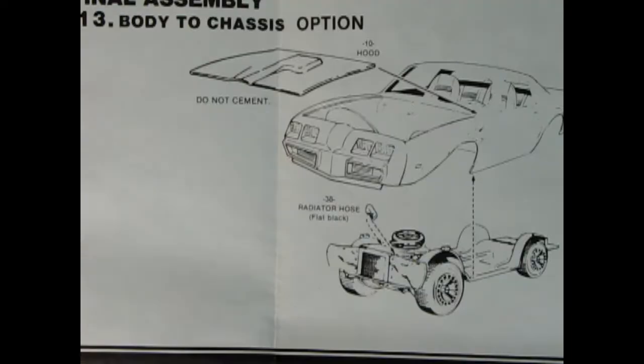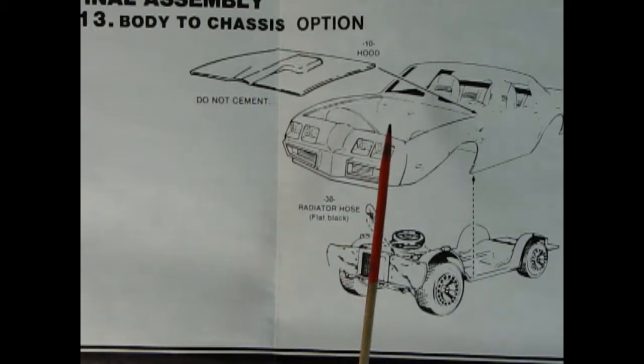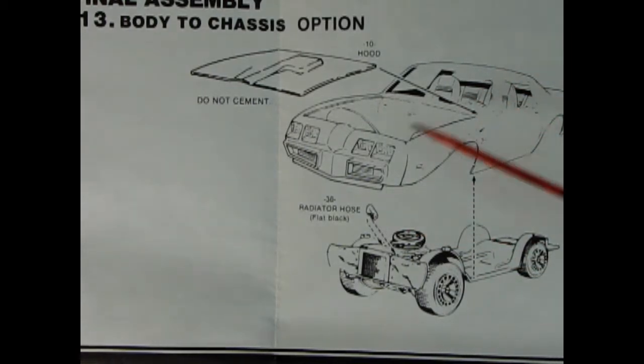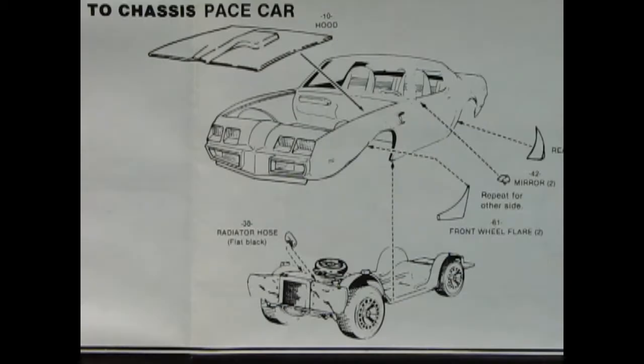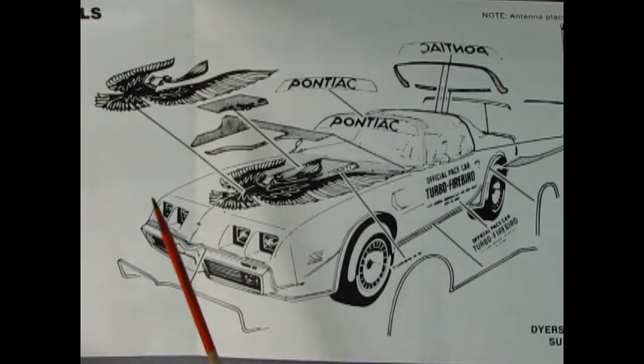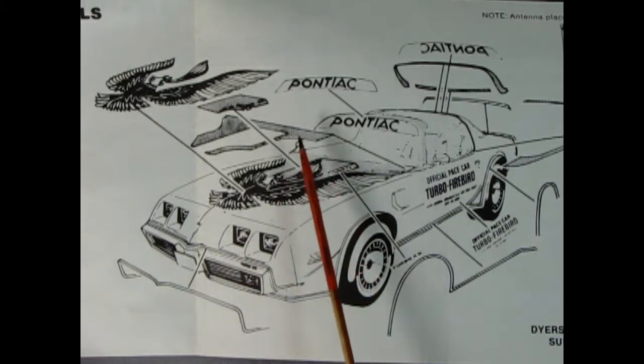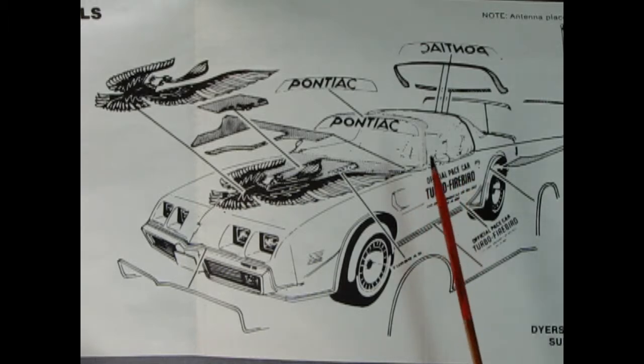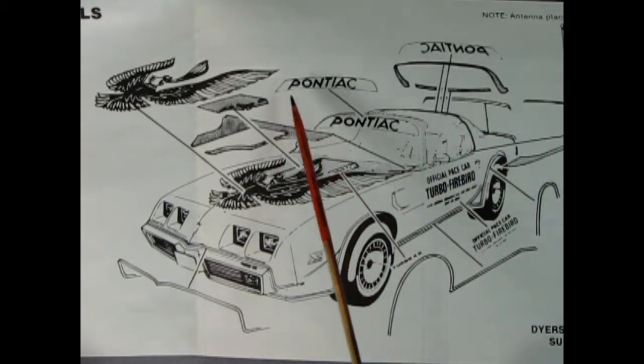Panel thirteen begins the final body assembly with the hood sitting on top, body drops onto the chassis, radiator hose, and once it's all glued together you move to step fourteen. Panel fourteen is for the pace car version which includes the hood with radiator hose but this time there's sport mirrors and rear and front wheel flares. Finally panel fifteen is decal placement for both stock and pace car - you would use the official pace car letters on the side, Pontiac visors on the windows.